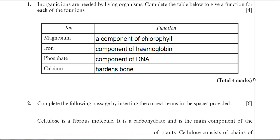So I've typed in some answers there. Magnesium then, component of chlorophyll. Iron, a component of haemoglobin. For the phosphate, I've decided to go for the component of DNA. But as I said previously, other functions of phosphate. And calcium, I've gone for hardened bone.